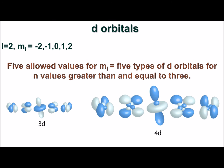The D orbitals have an L value of 2. m sub L has five values, and therefore there are five D orbitals for each value of n greater than and equal to 3.